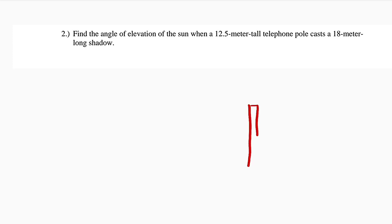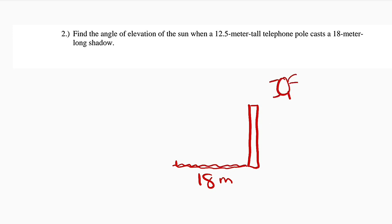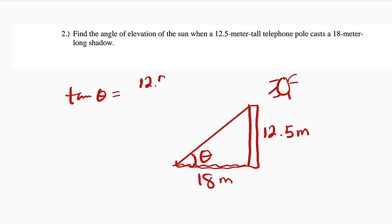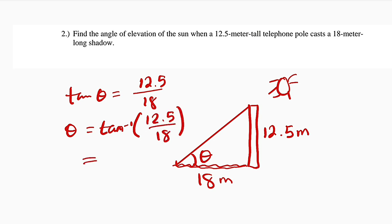Find the angle of elevation of the sun when a 12.5 meter tall telephone pole casts an 18 meter long shadow. Let's assume we have a telephone pole here that casts a shadow of 18 meters. The sun will be somewhere here casting on the pole, so we have an angle of elevation theta. The pole is 12.5 meters. The relationship between this side and this side is tangent. So tangent of theta equals opposite 12.5 divided by the adjacent, which is 18. Therefore theta will be tan inverse of 12.5 divided by 18, which is approximately equal to 34.78 degrees.